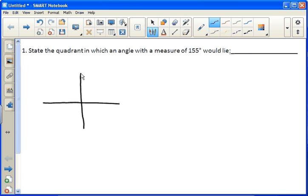State the quadrant in which an angle with a measure of 155 degrees would lie. So first, remember the quadrants are labeled 1, 2, 3, and 4. When we're dealing with degrees, we start over here on the right with 0 degrees, go up top with 90 degrees,